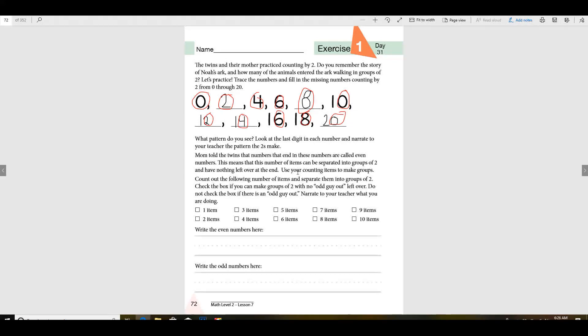Now you should have some counters. I don't know if you have beans or paperclips or rocks or counters or whatever you have. It says to count out the following number of items and separate them into groups of two. Check the box if you can make groups of two with no odd guy left over. Do not check the box if there is an odd guy out, and then you're going to have to narrate to your teacher what you're doing. All right, now you get one item, just get one. Now set it in front of you. Now is it groups of two? No, there's just one, so he's the odd guy out right now. Can you get two? Okay, is that an even two and there's no odd guy out? Good, then checkmark two because two items mean that you have an even number of two.